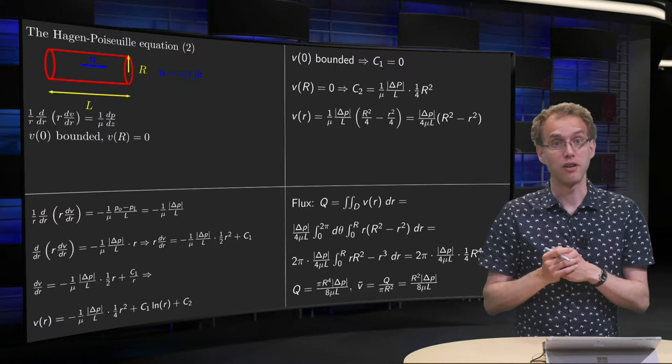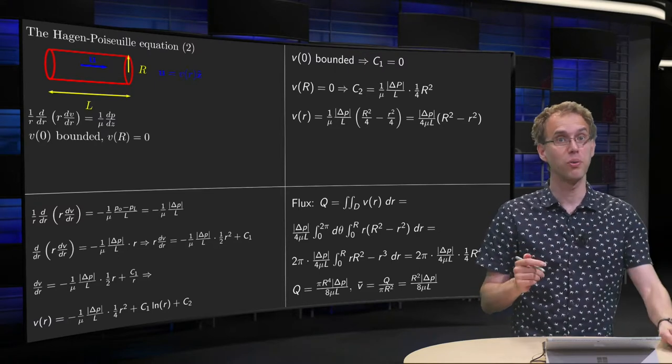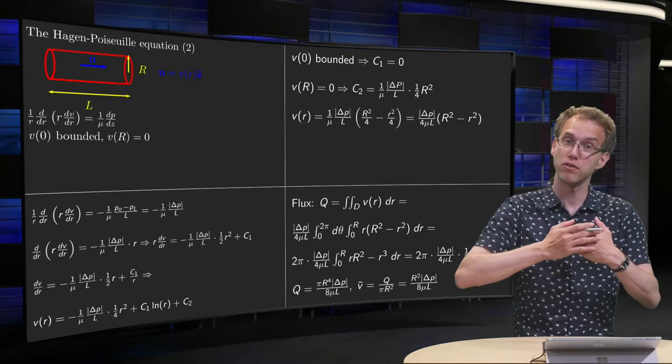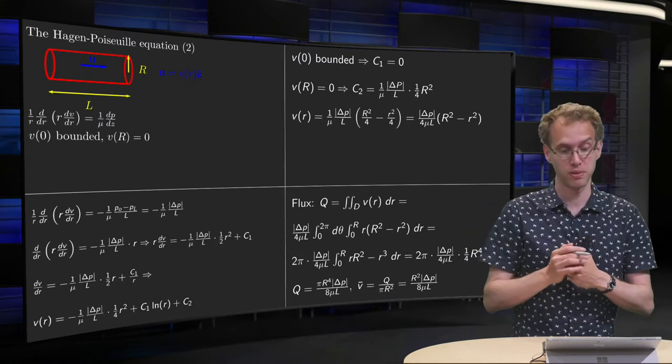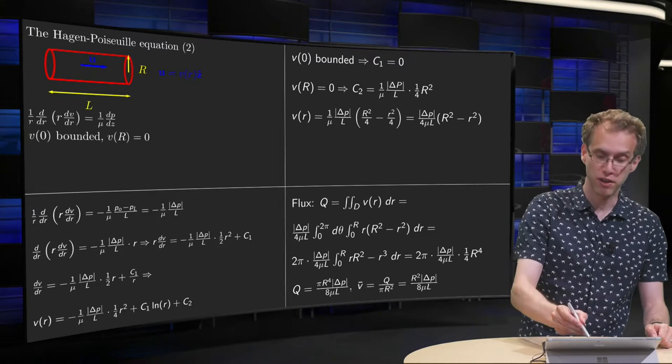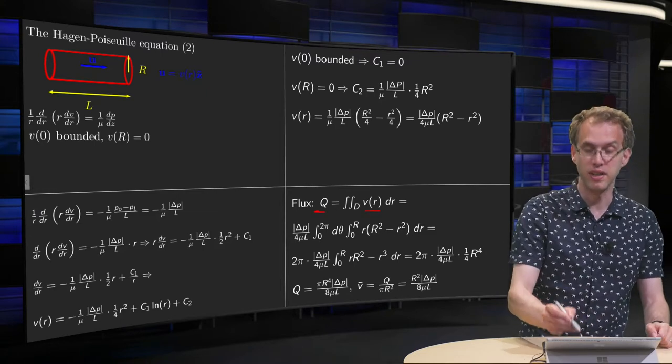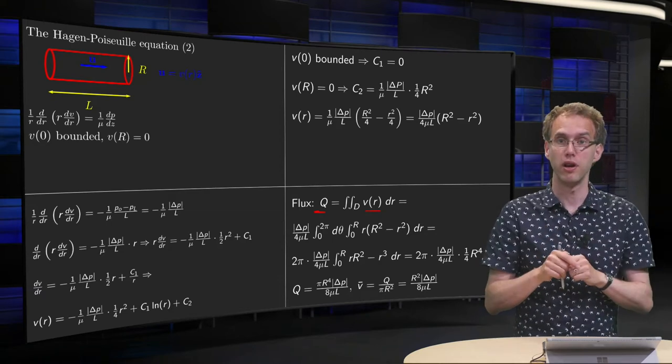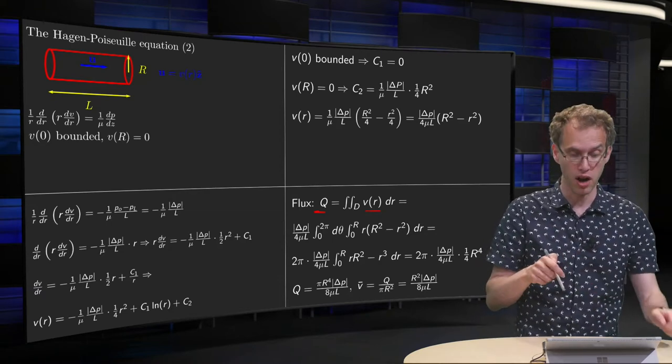Now, what do we get for our flux? We want to know how much water is flowing through the tube, so we need a flux. You get a flux by integrating your V with respect to your area dA across the whole circle with radius R.